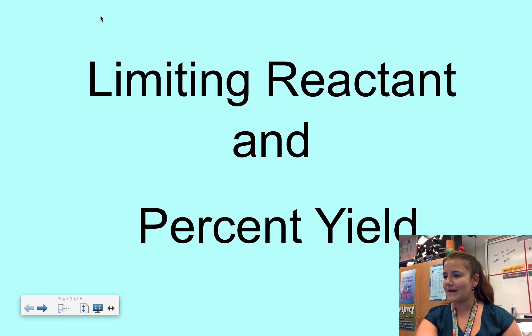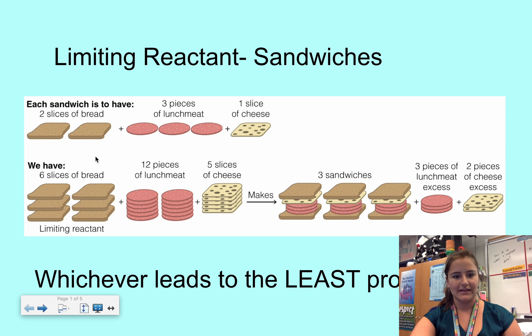But if you think about it, it's actually pretty simple. You can think of limiting reactants like you're making a sandwich. In order to make a sandwich, each sandwich I want to have two pieces of bread, three pieces of lunch meat, and one slice of cheese.